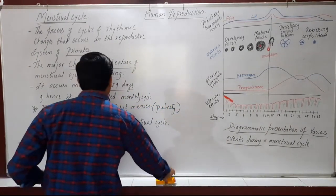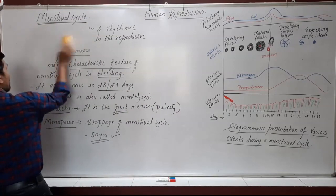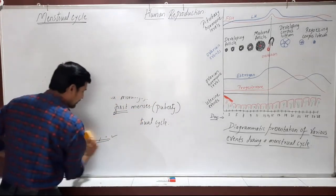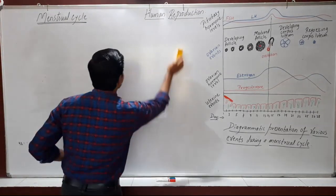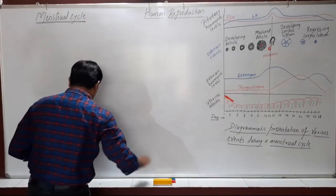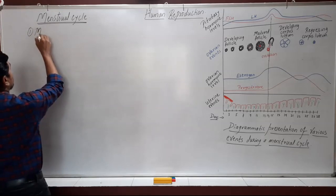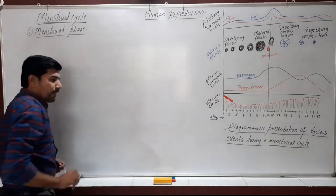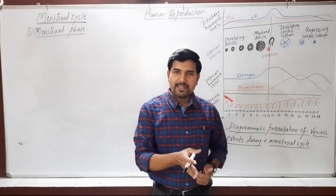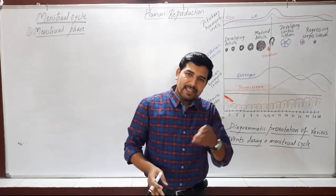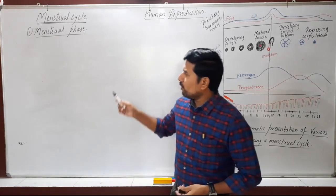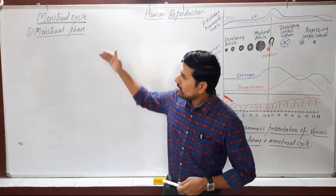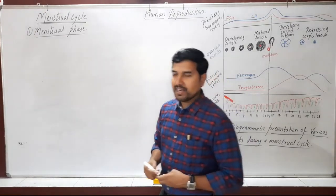Now let's move on to the phases of the menstrual cycle. The menstrual cycle is divided into four phases. The first phase is the menstrual phase. The second phase is the pre-ovulatory phase, also called the proliferative phase, endometrial reformation phase, or follicular phase. The third phase is ovulatory, and the last phase is the post-ovulatory, luteal, or secretory phase.